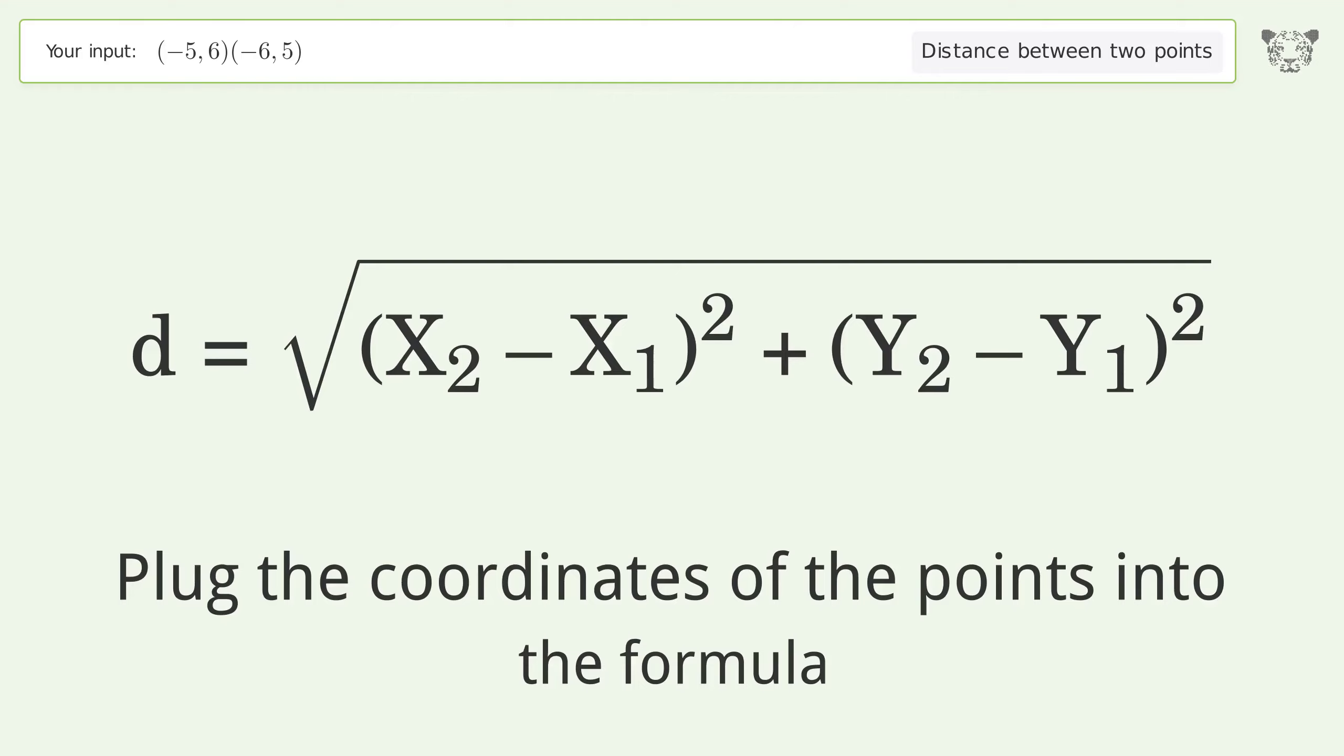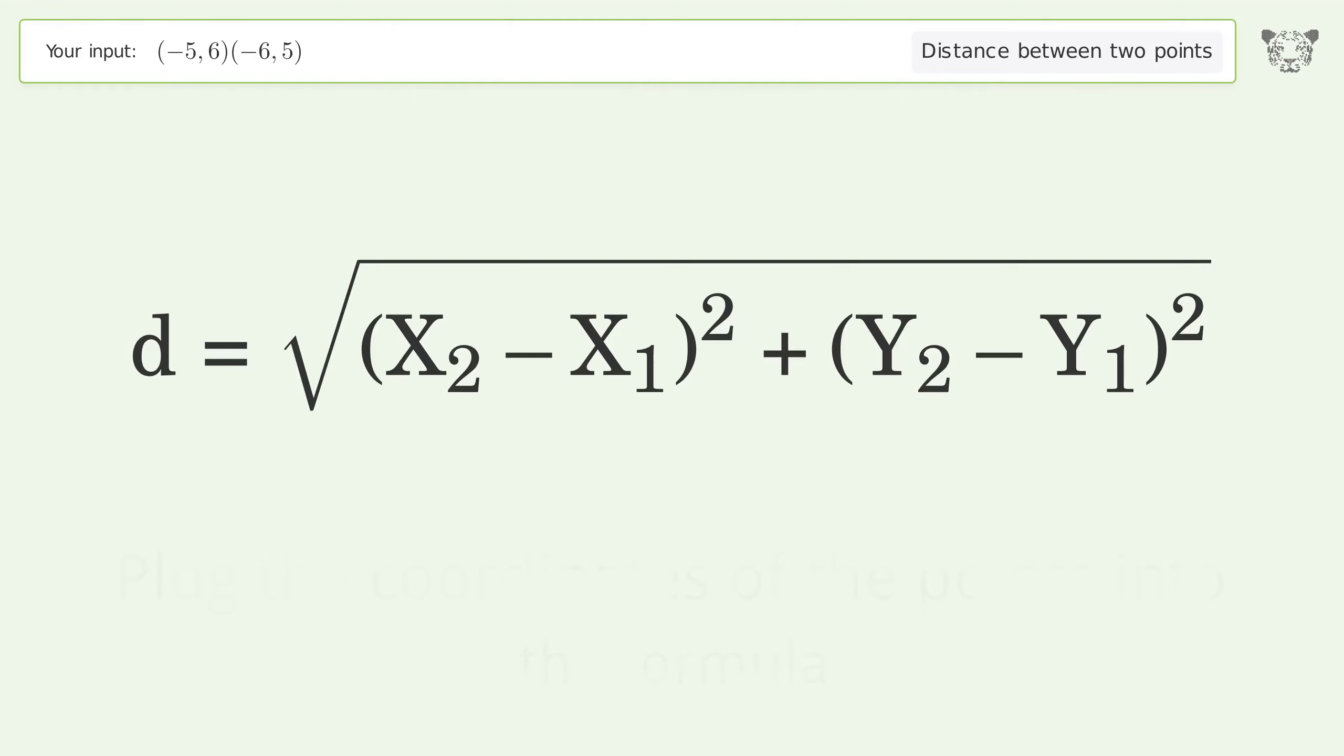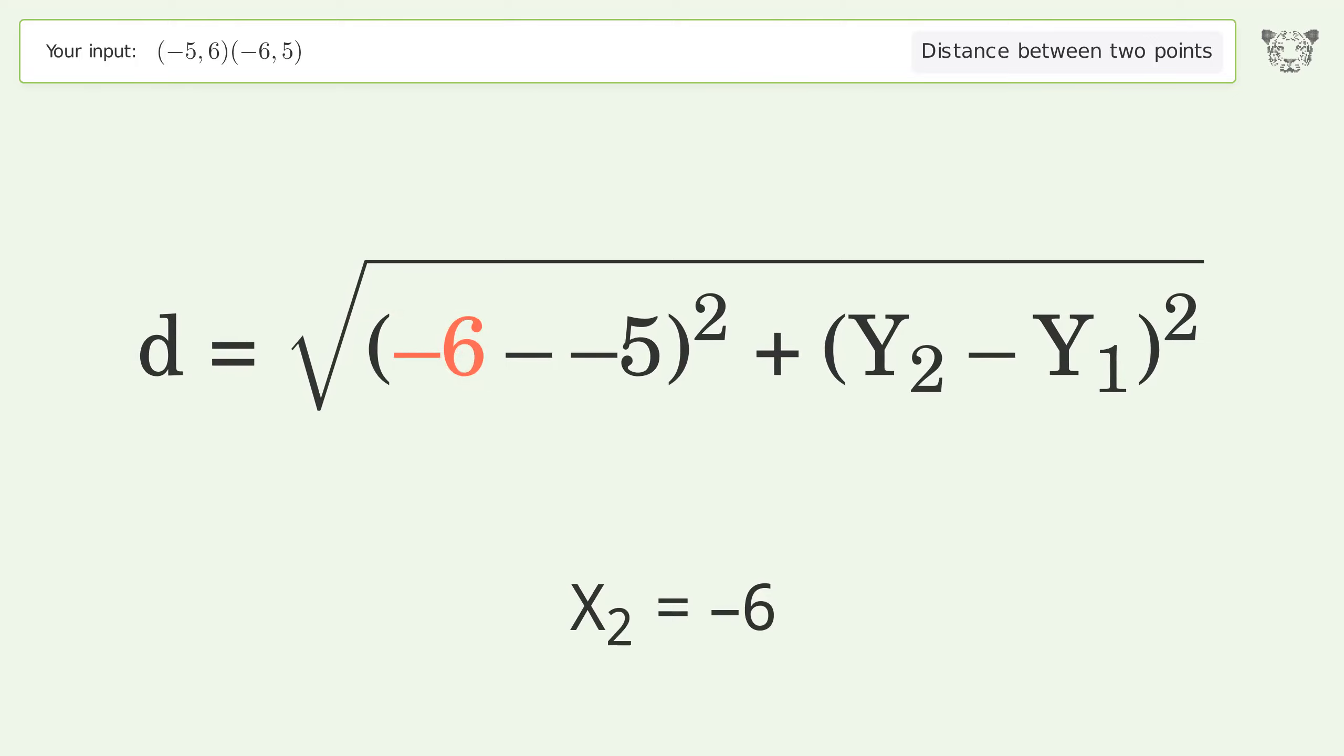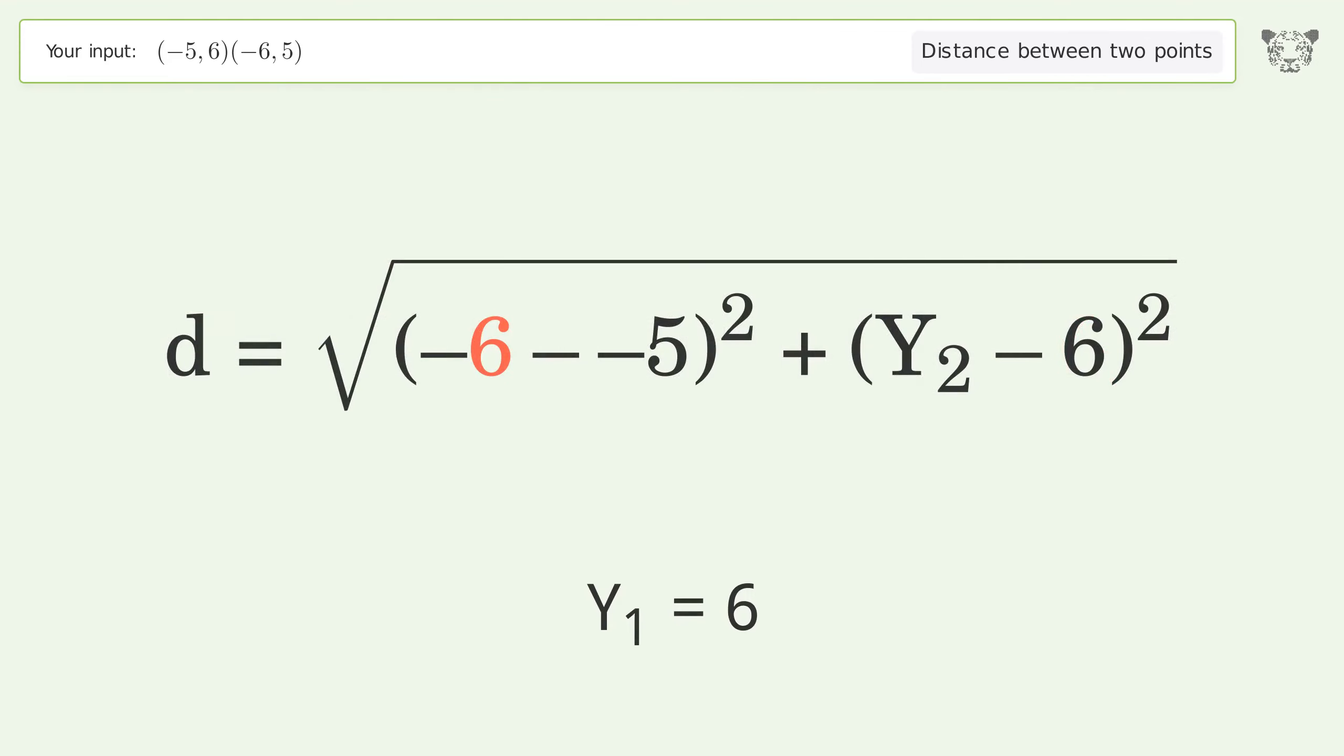Plug the coordinates of the points into the formula: x1 equals negative 5, x2 equals negative 6, y1 equals 6, y2 equals 5.